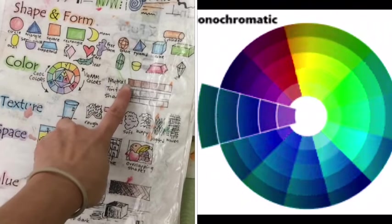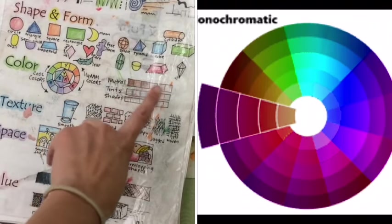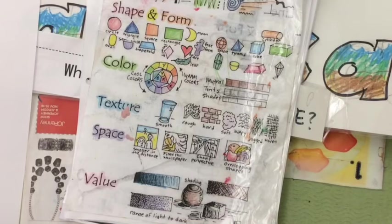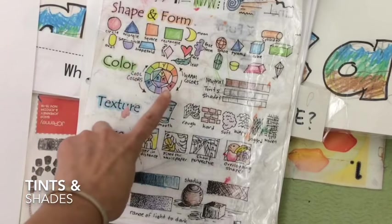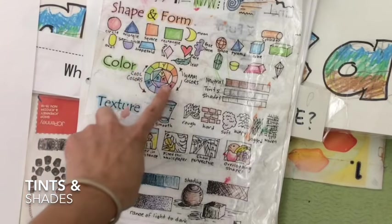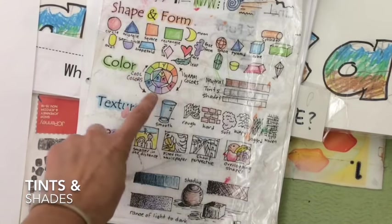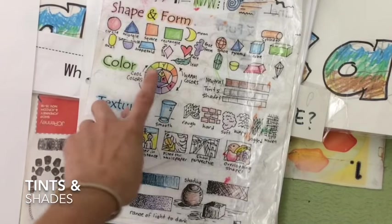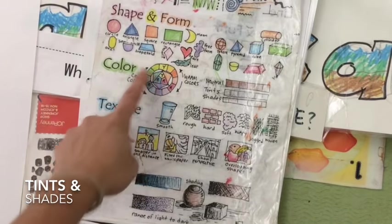You don't see neutral colors on the color wheel — those are brown, black, and white — but we are going to be using black and white to create tints and shades. So you can pick any one of the primary colors or the secondary colors to use for your landscape. I'm going to choose a secondary color: green.